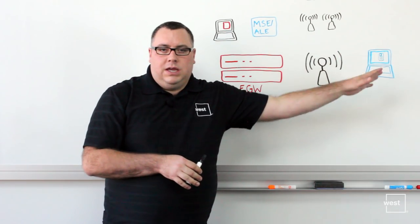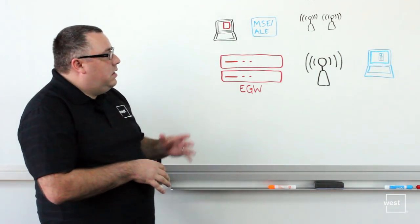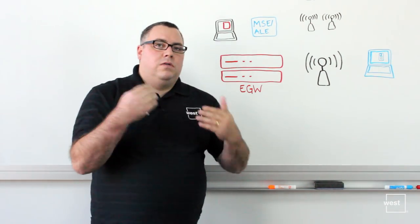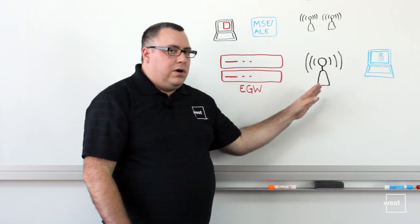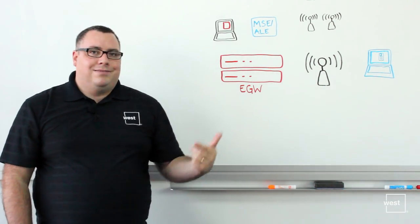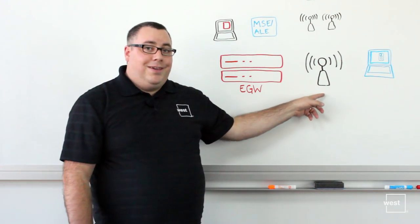This could be, for example, a soft client running on a laptop. The way of identifying where these devices are is essentially where they're connecting to the network. Whenever they connect to the wireless access point, they're authenticated and talking to the BSSID, the Basic Service Set Identifier, which uniquely identifies each access point.